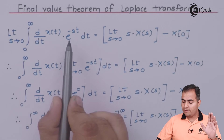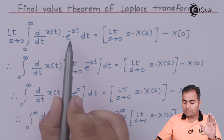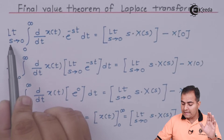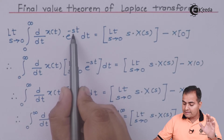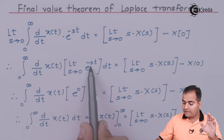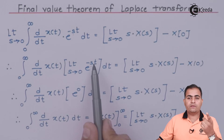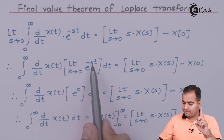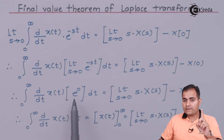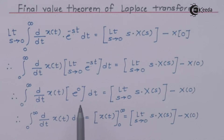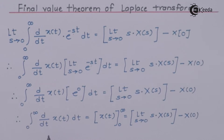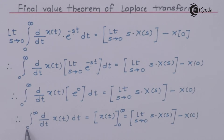Applying the limit as s→0 to e^(−st): s is replaced by 0, making the exponent 0, so e^0 = 1. What remains on the left-hand side is the integral of d/dt x(t) dt. We know that the integral of a derivative is just the original function, so we are left with x(t) evaluated over its limits from 0 to infinity.